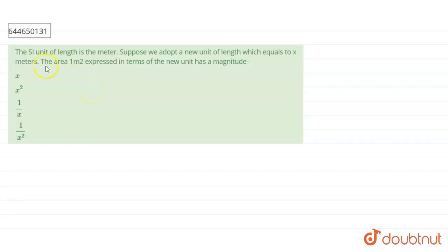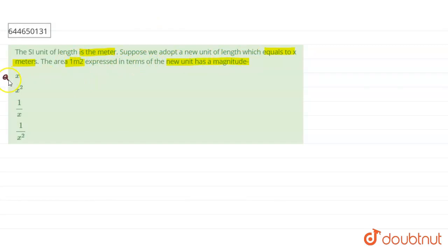Hello students, the question is: given that the SI unit of length is the meter. Suppose we adopt a new unit of length which is equal to x meters. The area 1 meter square expressed in terms of the new unit has a magnitude. Four options are given: x, x square, 1 by x, and 1 by x square.